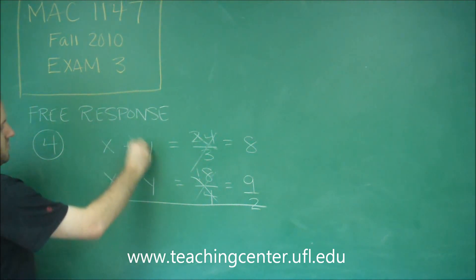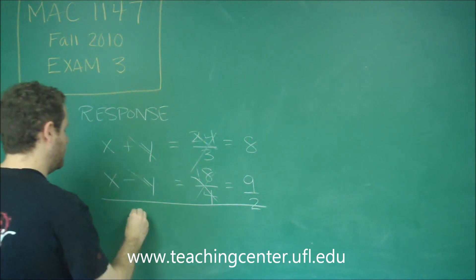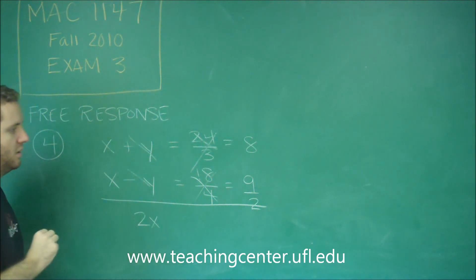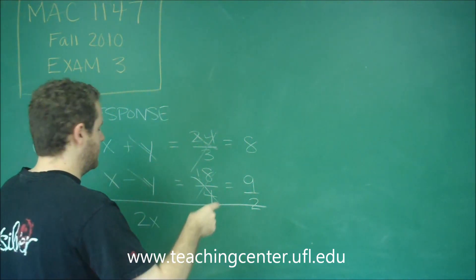So if we add these together, plus and minus y will cancel out. We'll get 2x. Over here, we'll get 8 plus 9 over 2.